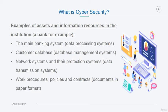Let us take more detailed examples of assets and information resources in the institution. Let's take a bank for example. You'll find the main core banking system, which has data processing systems, integration systems, communication systems, electronic check clearing systems, e-channel systems, etc. You'll find customer databases with database management systems, human resources management systems, etc. You'll find networking systems and their protection systems like data transmission systems. You'll find work procedures, policies, contracts, which are documents in paper format.